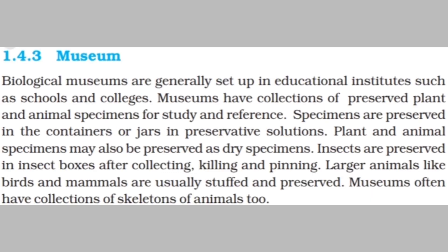The next taxonomical aid is the Museum. Biological museums are generally set up in educational institutes such as schools and colleges. They have collections of preserved plant or animal specimens for study and reference. Specimens are preserved in containers or jars in preservative solutions, or as dry specimens. Insects are preserved in insect boxes after collecting, killing, and pinning. Larger animals like birds and mammals are usually stuffed and preserved, and museums often have collections of animal skeletons too.